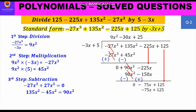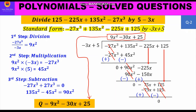We write the product −75x + 125 below the new dividend −75x + 125 and move to subtraction. Changing signs: −75x becomes +75x and +125 becomes −125. Then −75x cancels with +75x, and +125 cancels with −125. The remainder is 0. So the quotient is 9x² − 30x + 25 and the remainder is 0.